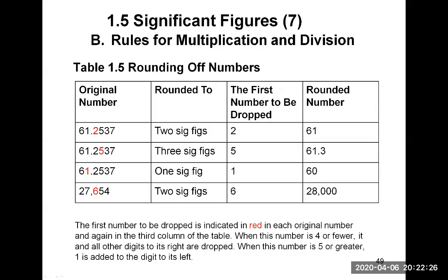With the same number 61.2537, if we need to round to three sig figs, we count from the left and keep the 6, the 1, and the 2. What comes after the 2 is a 5, so we need to round up: the 2 becomes a 3, and the answer is 61.3 when rounded to three sig figs.